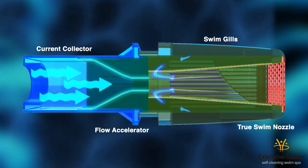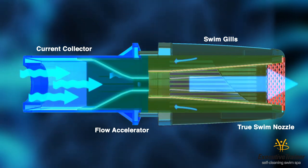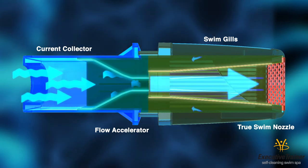Next, the swim gills surrounding the flow accelerator doubles the volume of water. Both sources of water are then combined in the second V, thereby supercharging the jet.